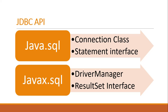The JDBC API is comprised of two packages: java.sql and javax.sql. These packages are collections of complete source code — defined by Oracle — containing classes, interfaces, methods, and other kinds of objects which you can use to implement requirements related to connecting to and accessing a database.